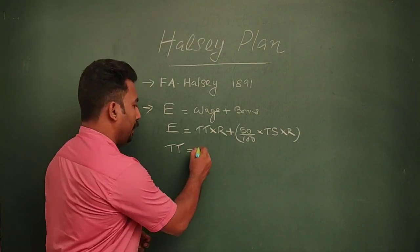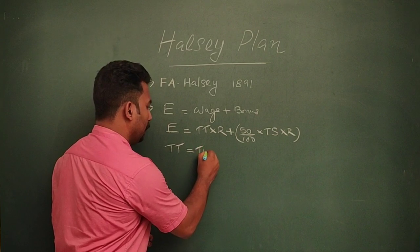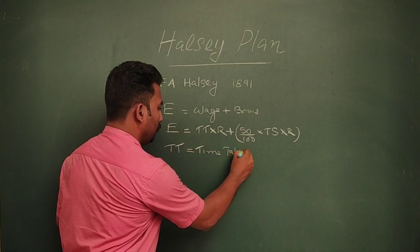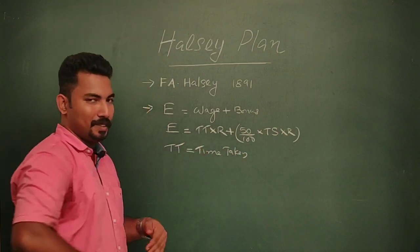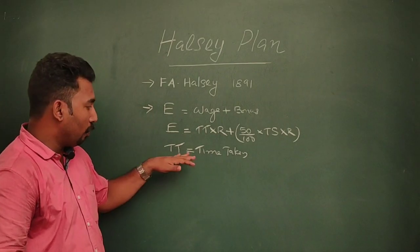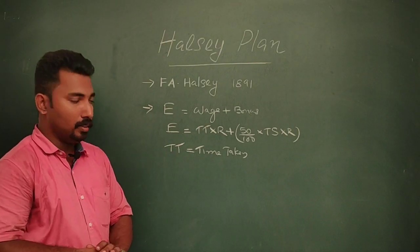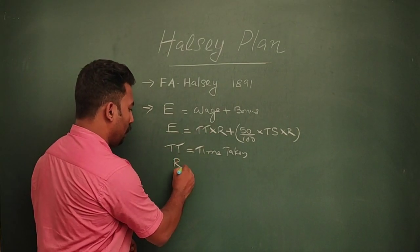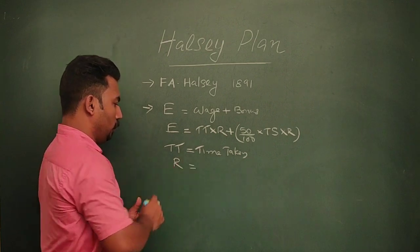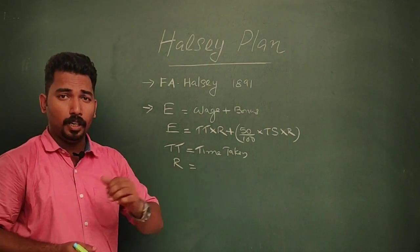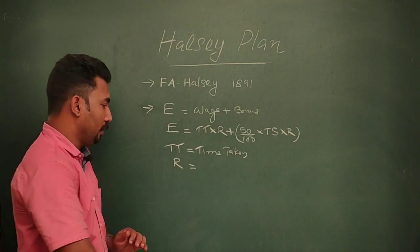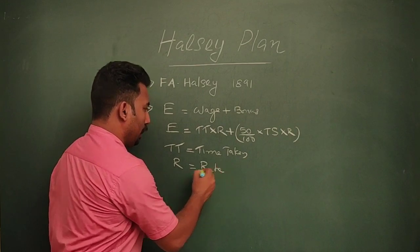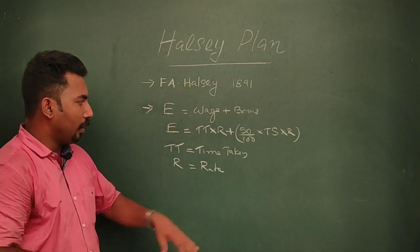In this formula, TT stands for time taken — the actual time the employee spends on the job. R stands for the rate provided to the employee, that is the hourly wage rate.